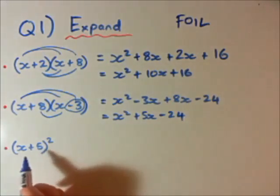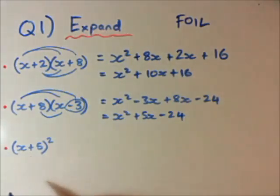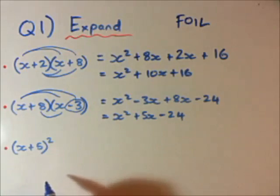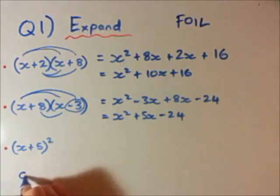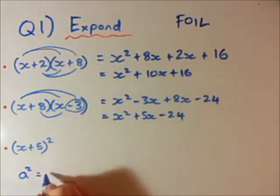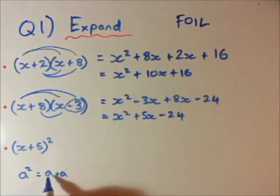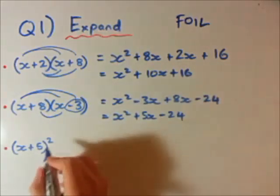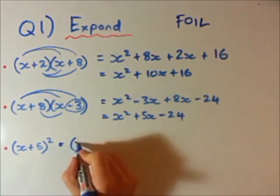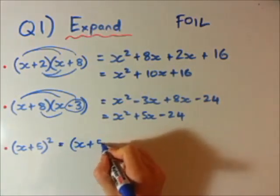Last one here, now we've got x plus 5 all squared. Okay, you can do this two different ways. I'm going to make this firstly into a way that you can then go and expand it and then I'll tell you the other way later on. If I have, let's say, a squared, that is the same as a times a, or a times by itself two times.